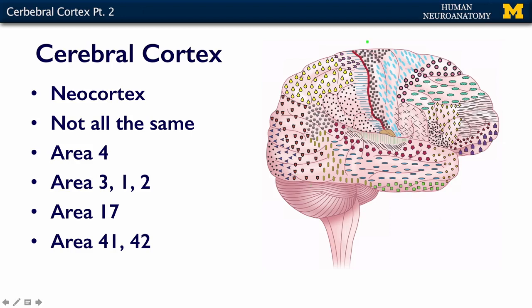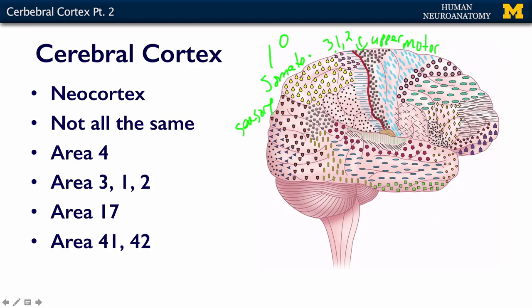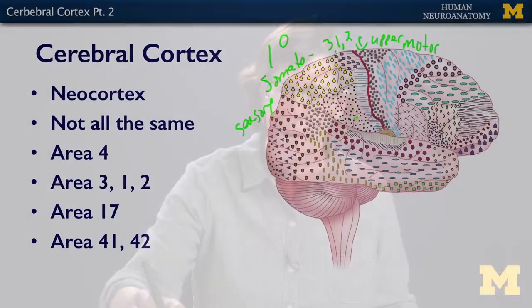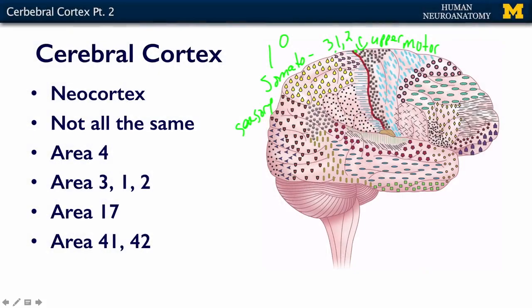Area four is right here, and that is your premotor, or your motor cortex. This is where our upper motor neurons live. The area right behind our postcentral gyrus — areas three, one, and two — is our primary somatosensory cortex. All of those fibers from our anterolateral system and our medial lemniscus system that go up the spinal cord into the brainstem and then to the thalamus, then go to this area of the cortex.